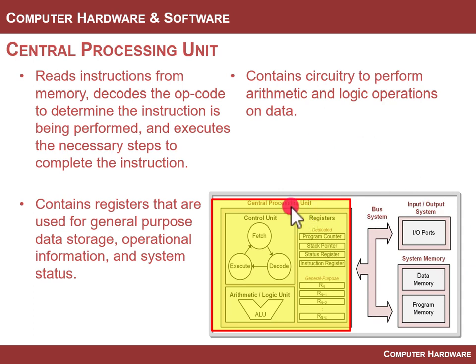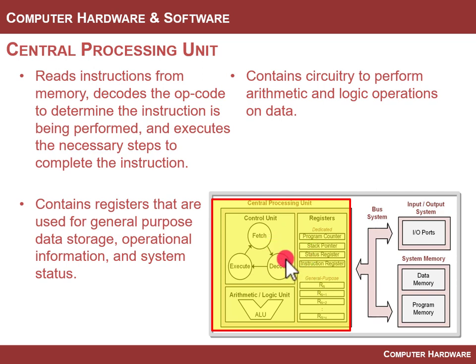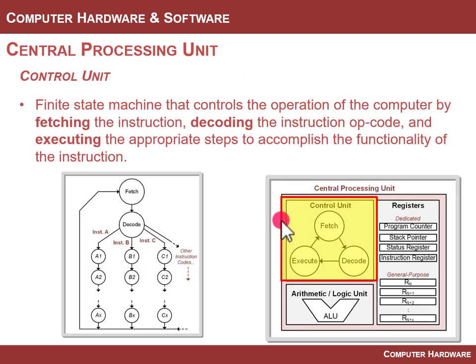The central processing unit is responsible for reading the instruction codes or op codes out of program memory, figuring out what to do with them, and moving information around to accomplish the task. It contains storage registers and circuitry to perform operations, and it performs the finite state machine that walks through fetch, decode, and execute. The control unit is the master controller — it knows how to execute all the instructions in the instruction set. It has a three-phase operation: fetch, decode, and execute.